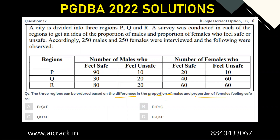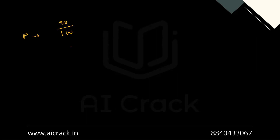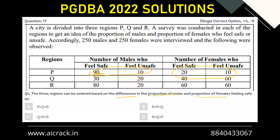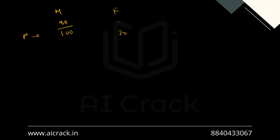The problem here is that the base is not the same across regions. In region P, 90 are feeling safe out of 100 males, and 10 are feeling unsafe, so the total is 100. For females in region P, the total is 30, and out of that 20 are feeling safe. We need to convert them to a similar base of 100. So out of 100 males in P, 90 are feeling safe. For females, 20 out of 30 are feeling safe.